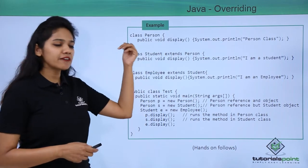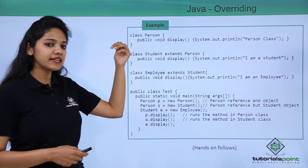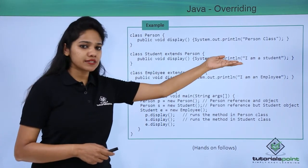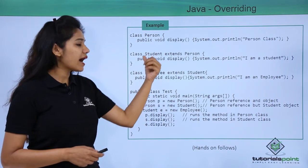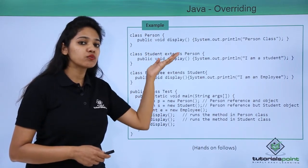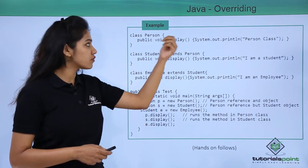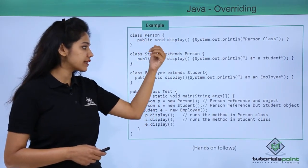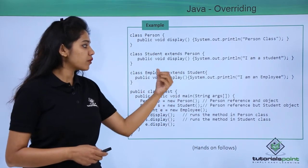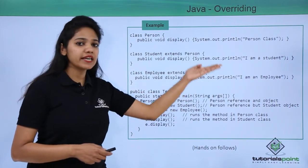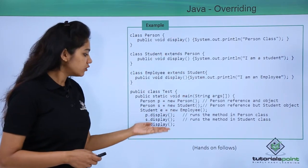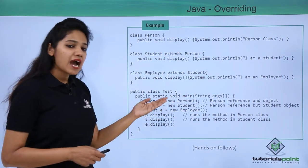Let us now see with the help of an example. We have created a class where we want to display certain data, then another class which extends from the person class, and then the employee class will again extend from another class.